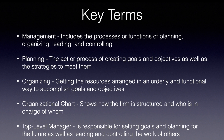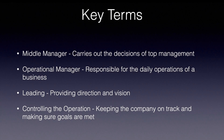A top-level manager is responsible for setting goals and planning for the future, as well as leading and controlling the work of others. A middle manager carries out the decisions of top management. An operational manager is responsible for the daily operations of a business. Leading means providing direction and vision, and controlling the operation means keeping the company on track and making sure that goals are met.